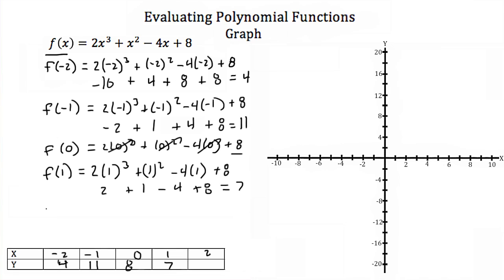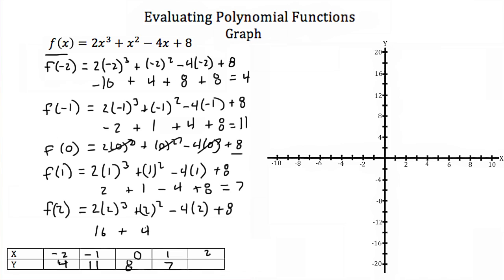Now let's do our last one. When x = 2: 2(2)³ + 2² − 4(2) + 8. 2 cubed is 8, times 2 is 16, plus 2 squared which is 4, minus 4 times 2 which is 8, then add the 8. So when x = 2, our function value is 20.